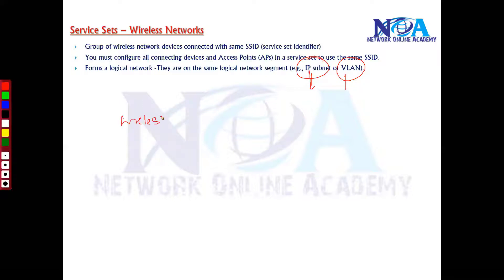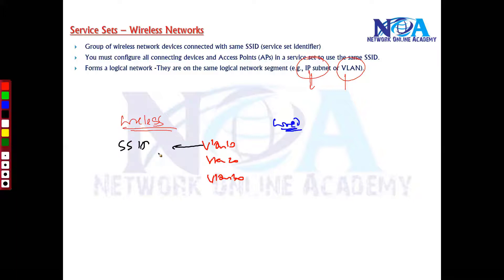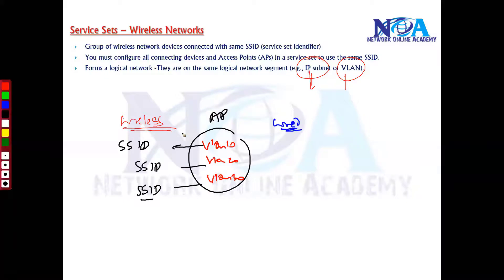For example, in a corporate wireless network, you might have VLAN 10, VLAN 20, and VLAN 30 pre-configured. Each VLAN represents a subnet, so every SSID will be different for each VLAN. When an access point connects to the wired network, it represents one logical subnet or one VLAN.